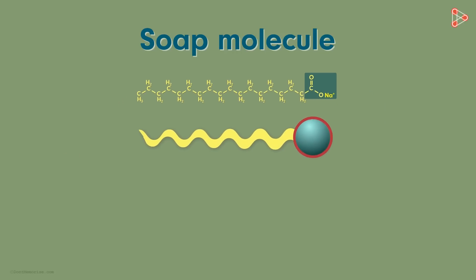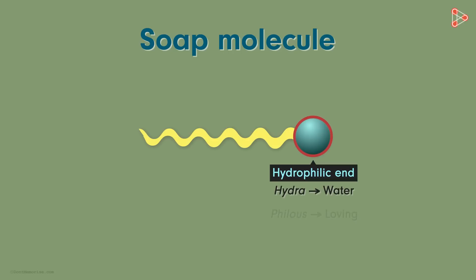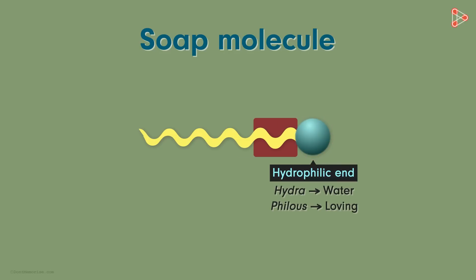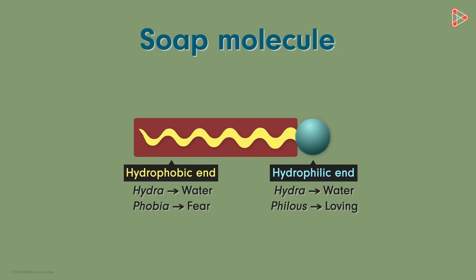The ball on top represents the carboxyl terminal with sodium or potassium attached. This end is called the hydrophilic end, or the head region. But why is it given such a name? Hydra is water, as we know, and phyllis is loving — meaning the end that loves being around water. In contrast, this terminal is called the hydrophobic end, or the tail region. Phobia, as we know, is fear — meaning the group that fears being with water, the portion that tries to stay away from water.